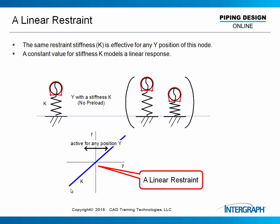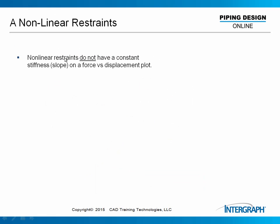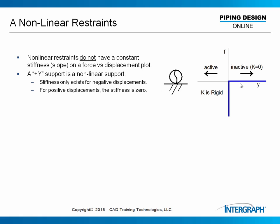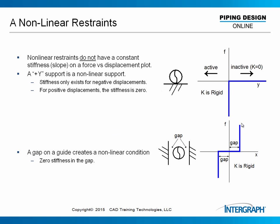All nonlinear restraints do not have that constant slope. A nonlinear restraint does not have a constant slope. Here is a plus Y support: if I want to move in the positive Y direction, it is free — I get no load. If I want to move down, I can't move at all — it is rigid. Here is a guide with a gap: there is no load until the gap closes, then the load gets very large and no more displacement occurs — effectively an infinitely rigid stiffness once the gap is closed. Those are illustrations of stiffness changing as a function of position. That is a nonlinear condition.